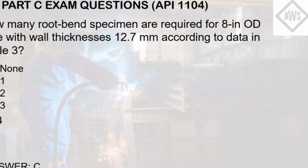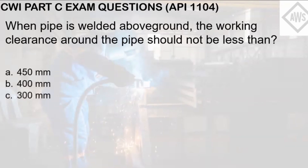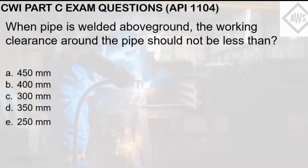When pipe is welded above ground, the working clearance around the pipe should not be less than: A. 450 mm  B. 400 mm  C. 300 mm  D. 350 mm  E. 250 mm. Chapter 7 refers to the design and preparation of a joint for production welding, where this clearance requirement is stated. When the pipe is welded above ground, the working clearance around the pipe at the weld should not be less than 16 inches or 400 mm. The standard ensures proper welding, especially for tough positions like 6G. The answer is letter B — 400 mm.